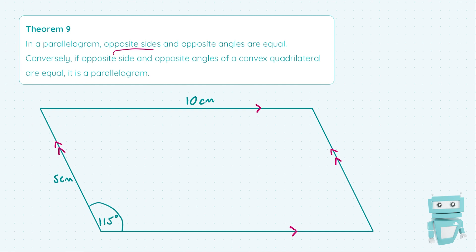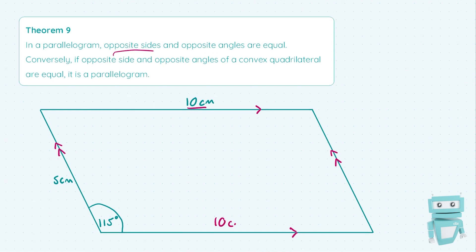The opposite sides in this parallelogram are equal, meaning that because the top side is 10 centimeters long, so is the bottom side. And because the left side is 5 centimeters long, the right side is also 5 centimeters long. That concludes it for dealing with our opposite sides.